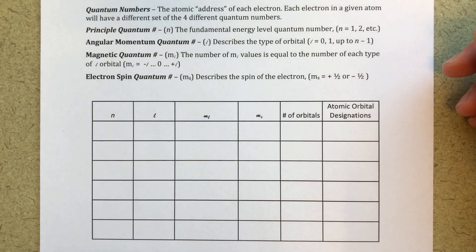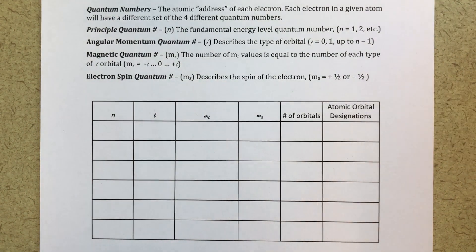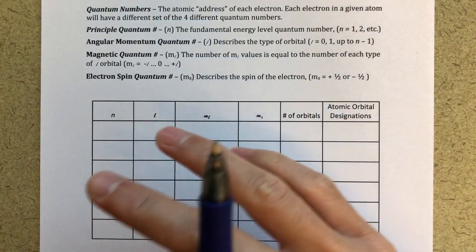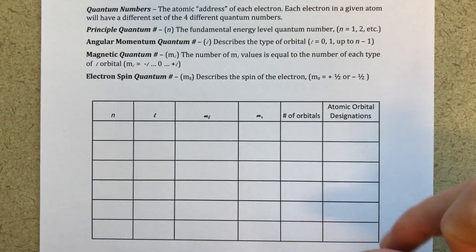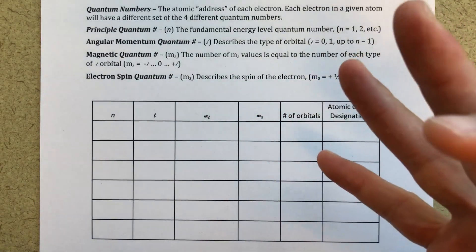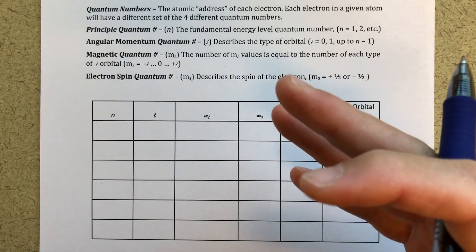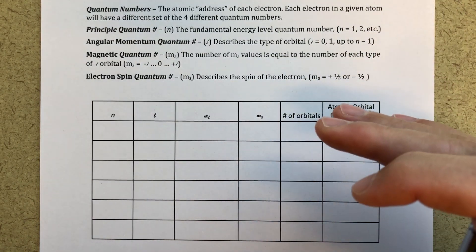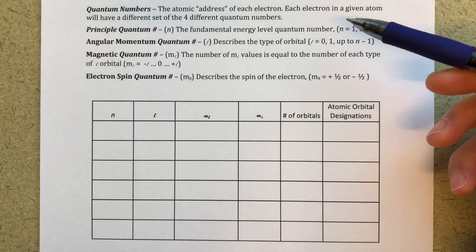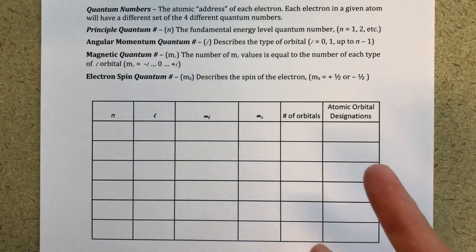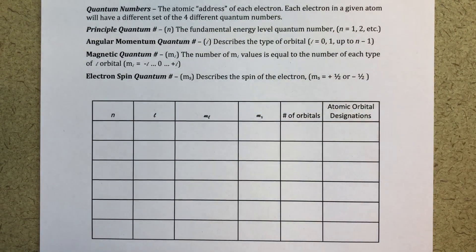Welcome back. This is a video where I'm going to talk about quantum numbers, fill out a table of quantum numbers, and then relate the sets of quantum numbers to their atomic orbital designation. This is a skill that really anyone should be able to do with just a basic knowledge of quantum numbers. Once you have the rules figured out, filling out this table becomes quite trivial — you just know the rules, follow the rules, and you should be good to go.